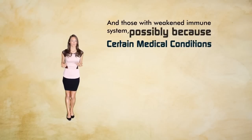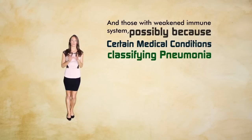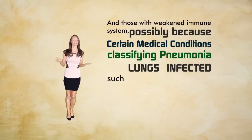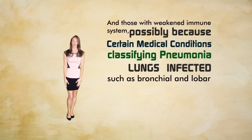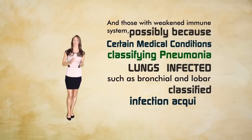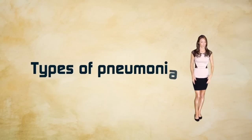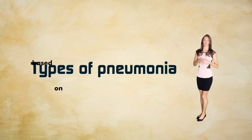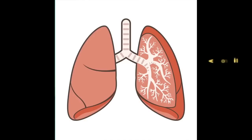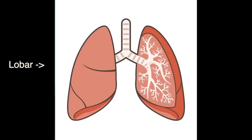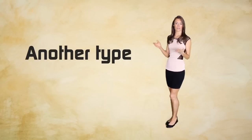There are many ways of classifying pneumonia — on the basis of the part of the lung infected, such as bronchial or lobar, or on the basis of how the infection was acquired. Bronchial pneumonia is inflammation of the bronchial tubes in which one or both lungs get patches. Lobar pneumonia is a classification in which one or more of the five main lobes of the lungs are infected, including all of the alveoli in the affected lobe.